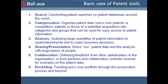Patent professionals and other patent-aware professionals — like inventors, scientists, business development, and licensing managers — need tools for the following tasks: Search, to conduct patent searches on patent databases around the world; Categorization, to organize patent data — one's owned patents, competitor's patents, or those of a potential acquisition — into categories and groups for easy access; and Analysis, analyzing large quantities of patent information to understand trends and make business decisions.